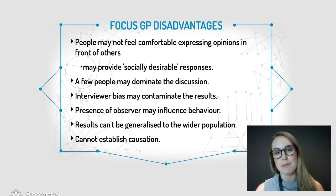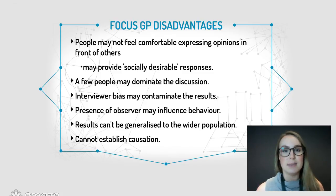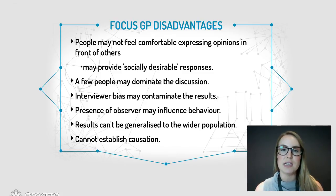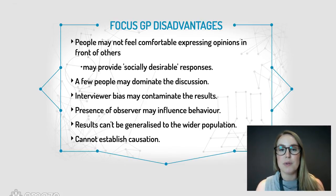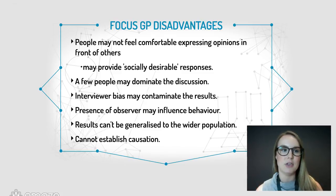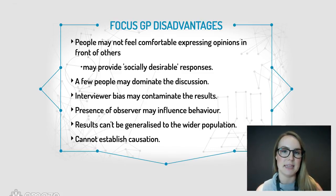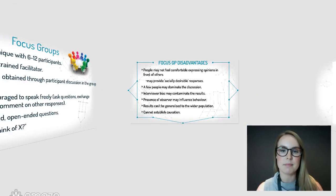The presence of the observer may also influence behaviour — just as students act very differently the second a teacher leaves the room. Because of the really small sample size and the nature of a focus group, you really can't generalise those results to the wider population, because you can't replicate the exact setting created in that one group. And because of that, it's really hard to establish causation — determining that one variable has an impact on another variable can be quite tricky.